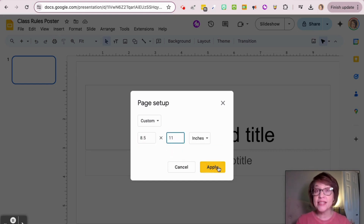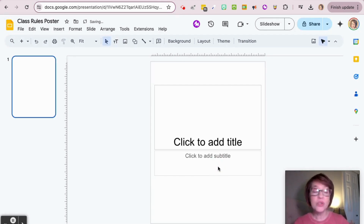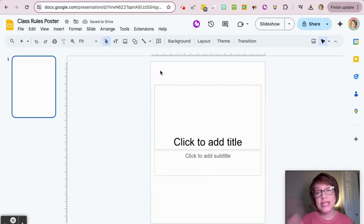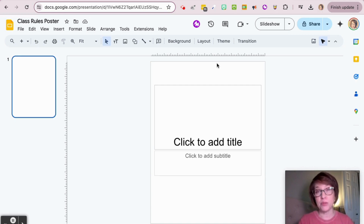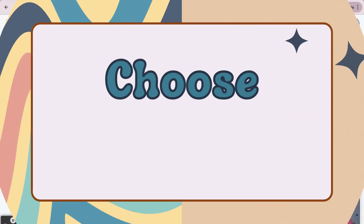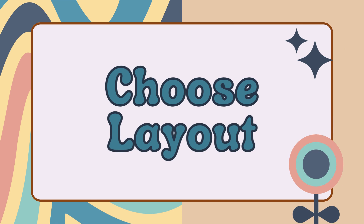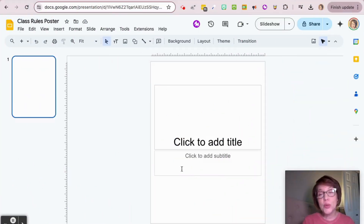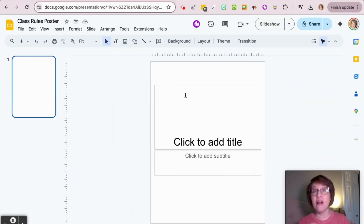All you have to do is come in and type 8.5, then type 11, and press Apply. What that does is make your slide the shape of a piece of paper, so if you were to print it, it would be like printing on a regular piece of paper.